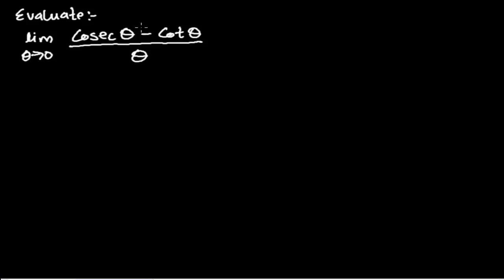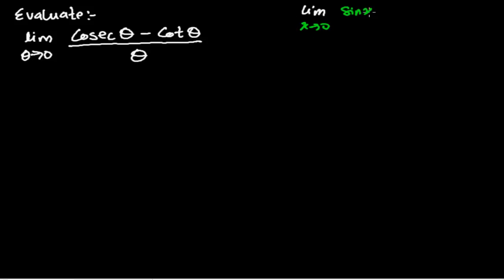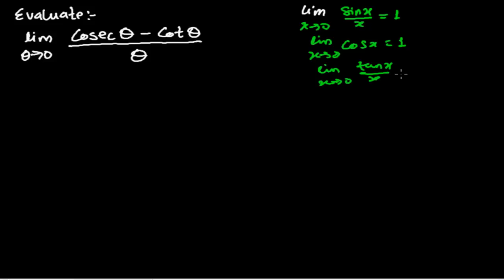Hi friends, here we're going to evaluate the limit of this trigonometric expression. As we have already learned, before evaluating any expression we have to convert that expression into some standard forms. The standard forms are: limit as x tends to 0 of sin(x)/x = 1, limit as x tends to 0 of cos(x) = 1, and limit as x tends to 0 of tan(x)/x = 1. We have to convert our expression into these standard forms.